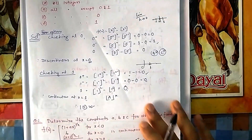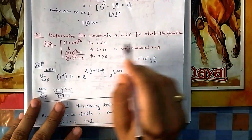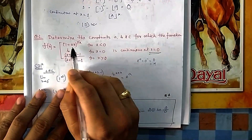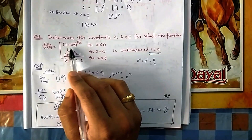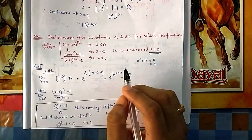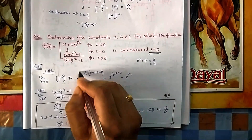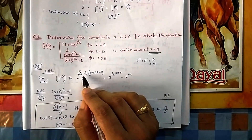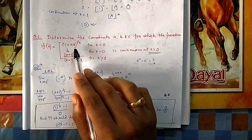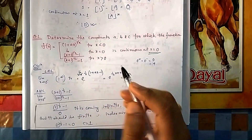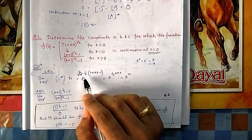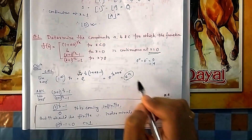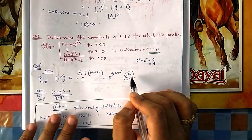For question 2, determine the constants a, b, c for which the given function is continuous at x = 0. For the left-hand limit (0−), the expression is in the 1-to-the-power-infinity format. We solve this as e to the power of [limit x→0 of (power × (base − 1))]. Since x cancels out, the LHL = e^a.